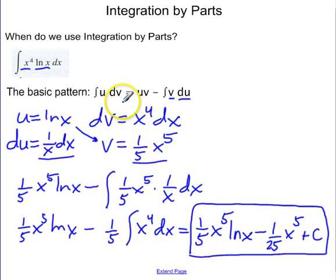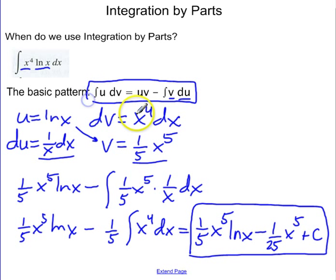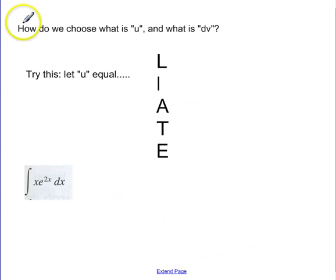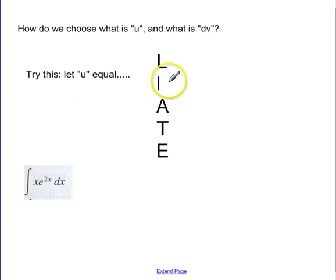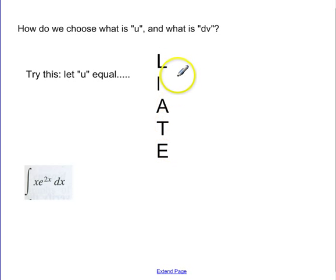You need to memorize this pattern: the integral of u dv is equal to uv minus the integral of v du. Now, how did I know to let natural log equal u? Think about this word: LIATE. The first choice for u is going to be a natural log function.